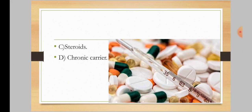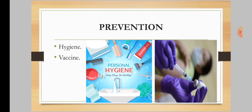Steroids: In the absence of intestinal complications, steroids can be used for severe toxicity, hyperpyrexia, septicemia, and hemolysis, along with antibiotics. For chronic carriers, ampicillin 1 gram 6-hourly for one week, followed by 1 gram 8-hourly for 6 to 12 weeks, is needed.